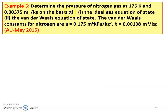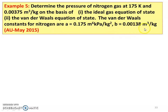Example number 5: Determine the pressure of nitrogen gas at 175 Kelvin and 0.00375 meter cube per kilogram, on the basis of the ideal gas equation of state and Van der Waals equation of state. The Van der Waals constants for nitrogen are A equal to 0.175 meter to the power 6 kilopascal per kilogram square and B equal to 0.00138 meter cube per kilogram. This is a May 2015 question.